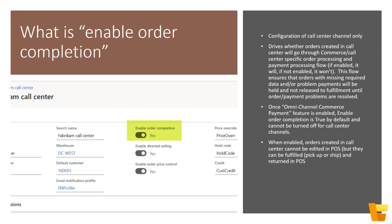When 'enable order completion' is toggled on, you can create and edit orders in call center and fulfill them through HQ or POS — for example, processing a store pickup order created in call center. However, you will not be able to edit that order through the POS application. If editing is needed after the order is created in call center with this setting enabled, it must be done through the call center application, not through POS.